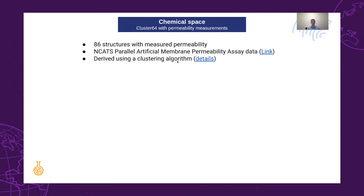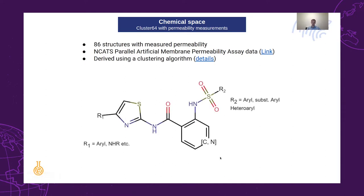One interesting feature of the dataset is that it contains structures with a well-defined chemotype, which is shown here. The chemotype is defined quite well, and this will be the chemotype of this presentation. In this hypothetical study, we will use these 86 structures as an initial chemical space to find new compounds with high permeability.